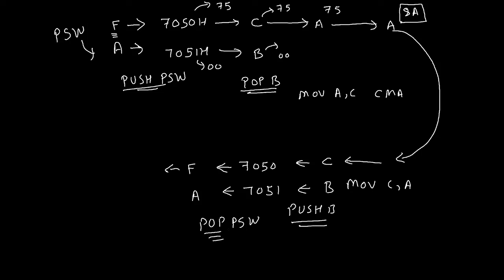Finally, from 7050H and 7051H, we will transfer the values to the F and A registers by writing POP PSW — the opposite of the initial PUSH PSW. Our F register will become 8A. The 8A in the accumulator gets copied into the flag register. We use this cycle because there is no direct instruction for altering the content of the flag register, but there is one for the accumulator.